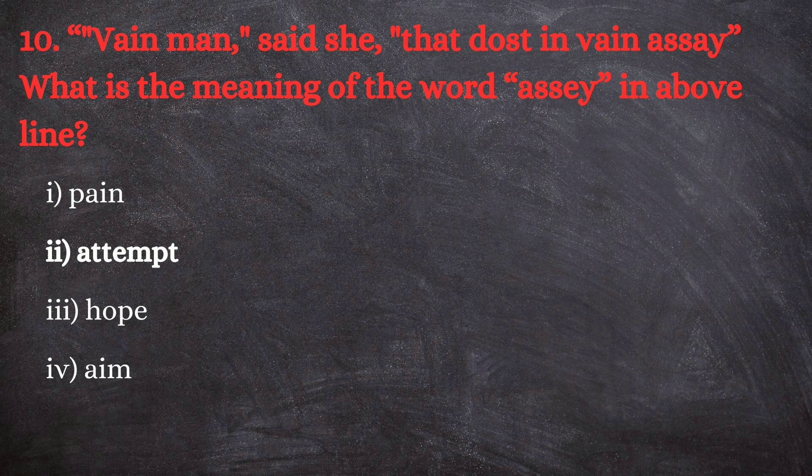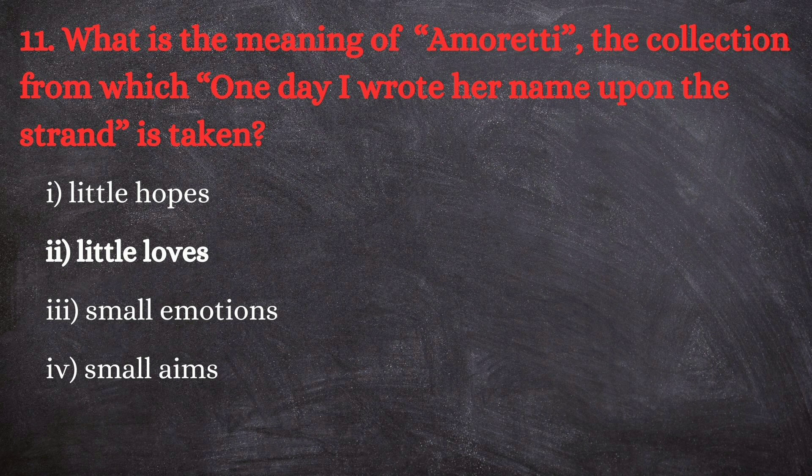Next question: what is the meaning of 'Amoretti,' the collection from which 'One day I wrote her name upon the strand' is taken? The options are: little hopes; second, little loves; third, small emotions; and fourth, small aims. The correct answer is the second one — little loves. 'Amoretti' means little loves.